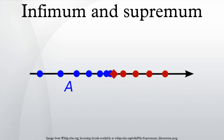In mathematics, the infimum of a subset S of a partially ordered set T is the greatest element in T that is less than or equal to all elements of S, if such an element exists. Consequently, the term greatest lower bound is also commonly used.